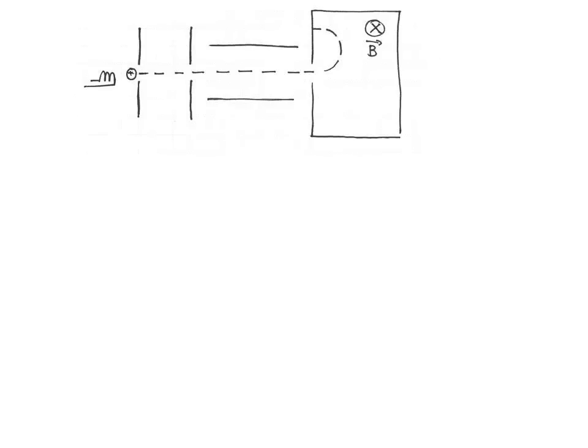The first thing I did is redraw the diagram. The second thing I'll do is figure out the sign of the plates to make sure that my potential differences are correct. In order to make sure that the positive charge is accelerated, we need the plate on the left to be positive and the plate on the right to be negative. Now to figure out the sign of the plates in the velocity selector, the first thing I need to do is find the direction of the magnetic force and find the direction of the electric force.